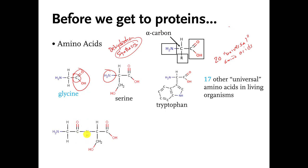There's another word I want you to know. This bond — the connection that got made — this single bond has a special name: it is called a peptide bond. Don't worry about where the name peptide comes from; it is a very old name that has stuck with us. But if I show you two amino acids connected to each other and I point to this particular bond, you should know that it's called a peptide bond.